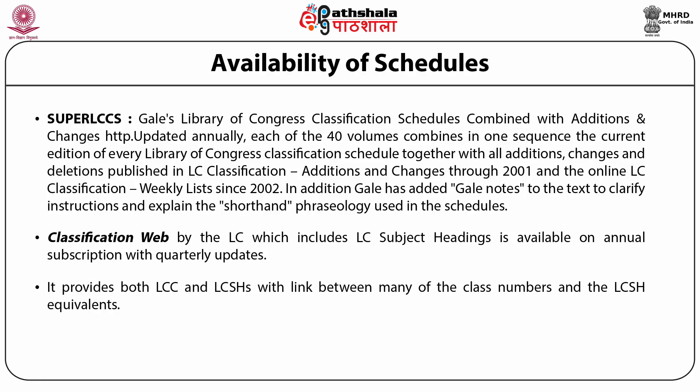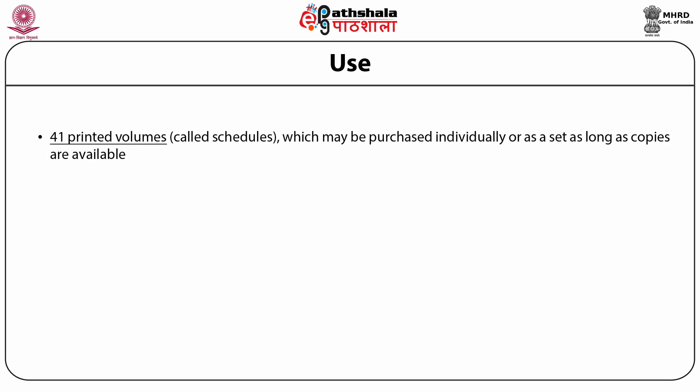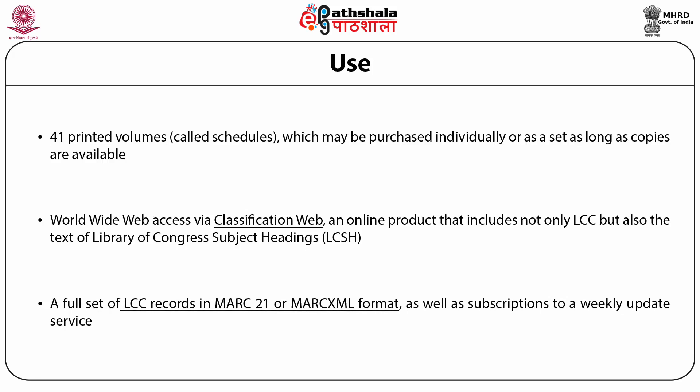Classification Web by the LC, which includes LC Subject Headings, is available on annual subscription with quarterly updates. It is an electronic version. It provides both the LCC and the LCSH with a link between many of the class numbers and the LCSH equivalents. The web version is convenient and efficient as it allows search by keyword, class number, proximity option and Boolean operations. Its 41 printed volumes called schedules may be purchased individually or as a set. The World Wide Web access via Classification Web includes not only LCC but also the text of the Library of Congress Subject Headings (LCSH). A full set of LCC records in MARC 21 or MARC XML format as well as subscription to weekly update services are available to customers.